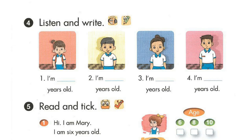Page 27, Lesson 2, Activity 4. Listen and write. 1. How old are you? I'm 6 years old. 2. How old are you? I'm 7 years old. 3. How old are you? I'm 8 years old. 4. How old are you? I'm 10 years old.